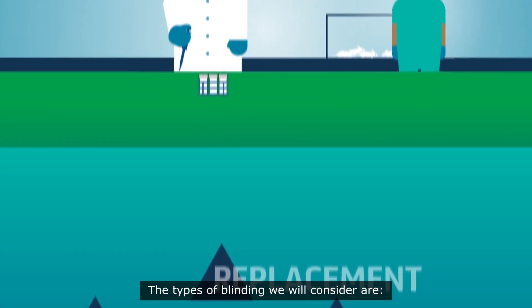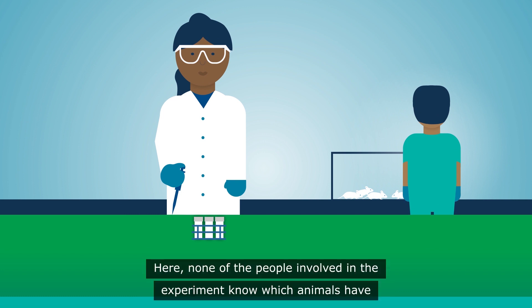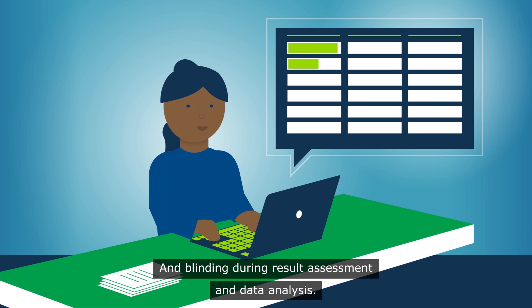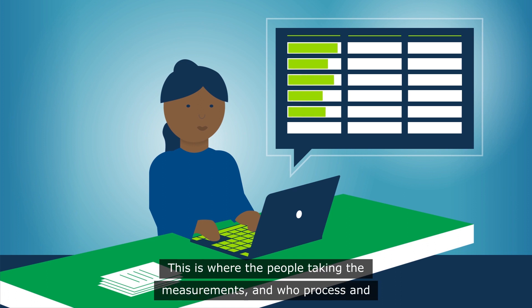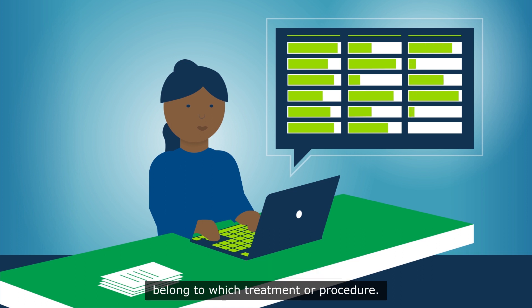The types of blinding we will consider are: blinding to intervention, where none of the people involved in the experiment know which animals have been assigned to which treatment or procedure; and blinding during result assessment and data analysis, where the people taking the measurements and who process and analyse the experimental results are unaware which results or data set belong to which treatment or procedure.